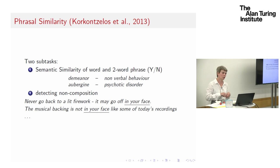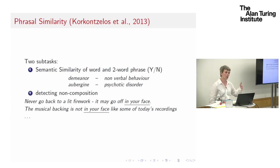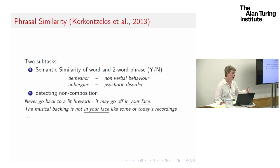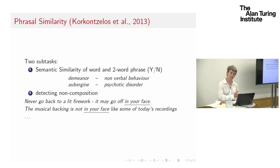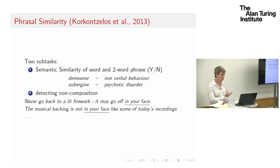However, in contrast, we also want to be able to compare systems that are more data-agnostic — systems that have all sorts of other architectures on a level playing field. One approach, following on from similarity work, was to get judgments from humans and then systems on the basis of semantic similarity — for example, 'demeanour is similar to non-verbal behaviour.' And also detecting non-compositionality: 'it may go off in your face' versus 'the musical backing is not in your face like some of today's recordings' — the second one is slightly opaque, you can't get the meaning from the individual words.